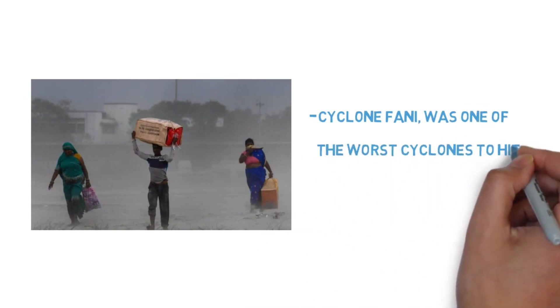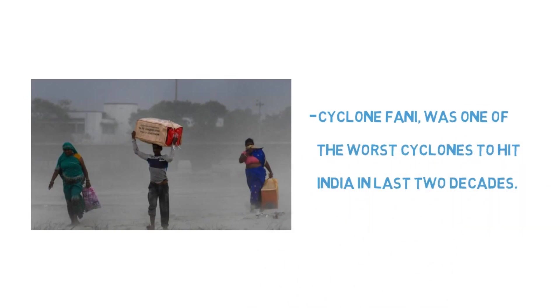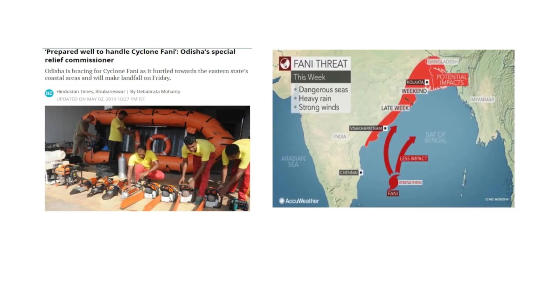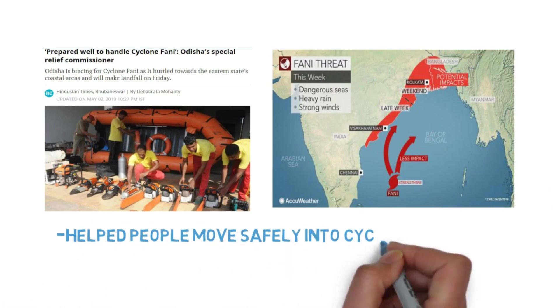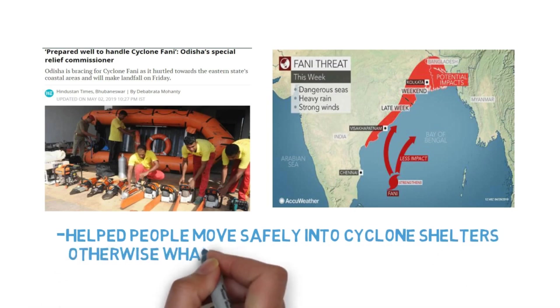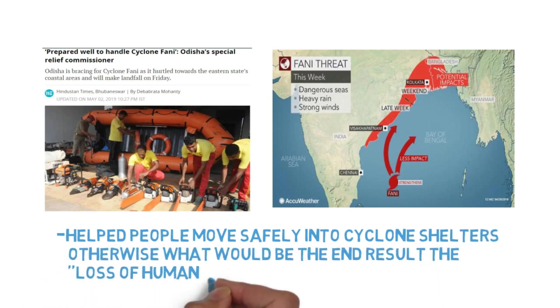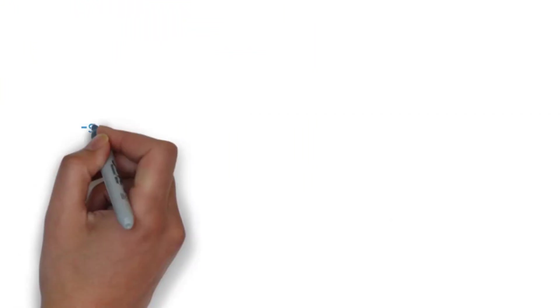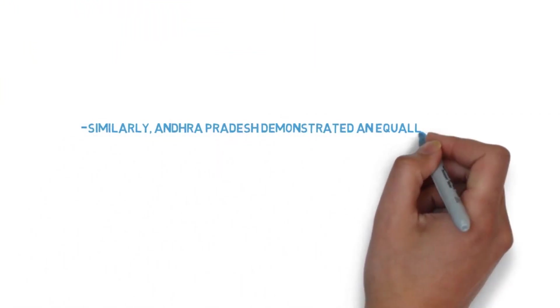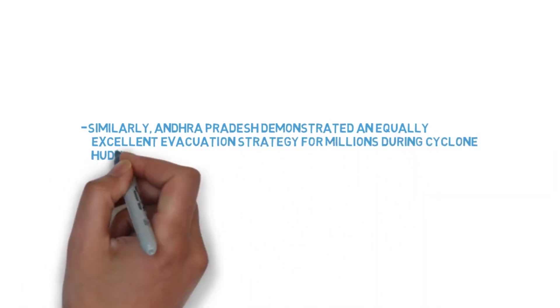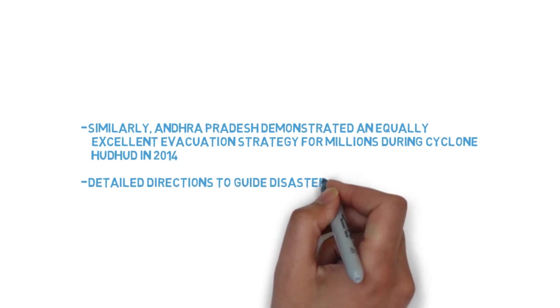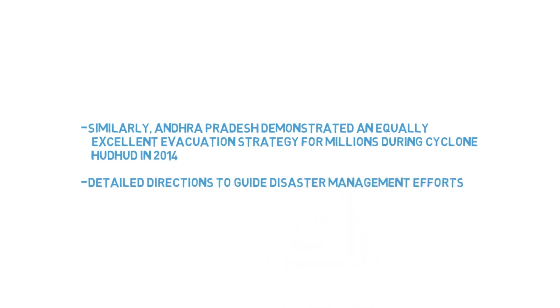Cyclone Fani was one of the worst cyclones to hit India in the last two decades. Odisha's preparedness, efficient early warning system, well-planned large-scale evacuations helped people move safely into cyclone shelters, otherwise the result would have been a massive loss of human life. Similarly, Andhra Pradesh demonstrated an equally excellent evacuation strategy for millions during a cyclone in 2014, with detailed directions guiding disaster management efforts.